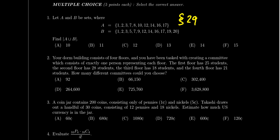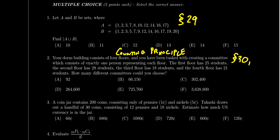Question number two will ask us to use the fundamental counting principle. The fundamental counting principle tells us that if we have independent events, the product of the number of choices for each event tells us how many total outcomes we have. For example, there are 25 students on one floor, 28 on another, 18 on another, 21 on another — how many different committees can we make? These counting principles came up in lessons 30 and 31 with permutations and combinations.